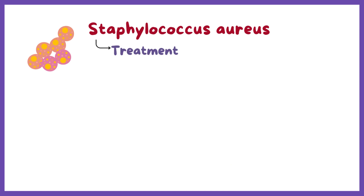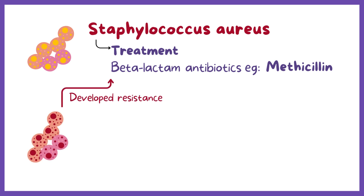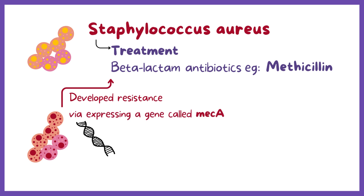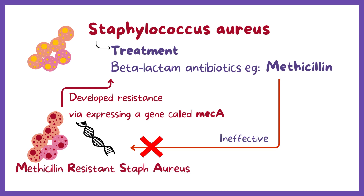Most S. aureus infections can be treated with beta-lactam antibiotics such as methicillin. Unfortunately, some S. aureus strains developed resistance to these antibiotics by expressing a gene called MEK-A that is unaffected by beta-lactam antibiotics. Methicillin and older penicillins can't act against them, rendering them ineffective. These methicillin-resistant Staph aureus strains are also called MRSA.